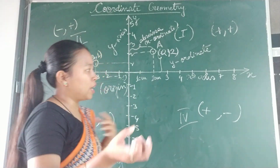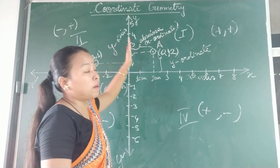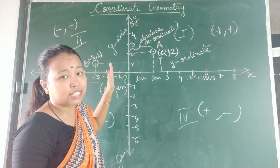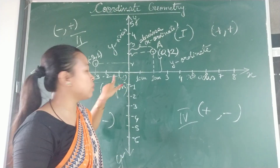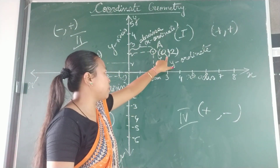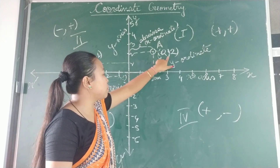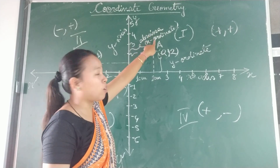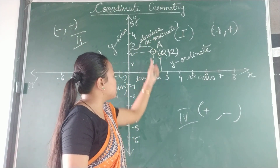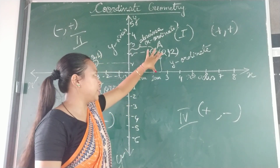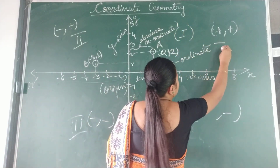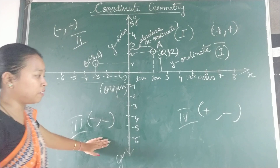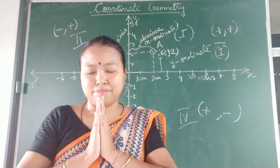Let me recap from the beginning. The Cartesian plane is where two perpendicular lines intersect each other. The horizontal line is the X-axis and the vertical line is the Y-axis. They intersect at a point called O, known as the origin. The distance from the Y-axis to a plotted point is called the abscissa or x-coordinate. The distance from the X-axis is the y-ordinate or ordinate. The quadrant signs are: first quadrant — plus plus, second quadrant — minus plus, third quadrant — minus minus, and fourth quadrant — plus minus. Thank you for watching the video.